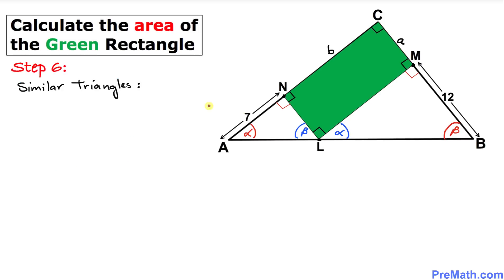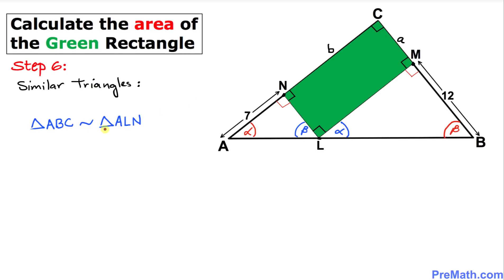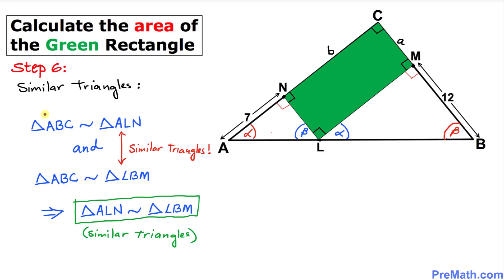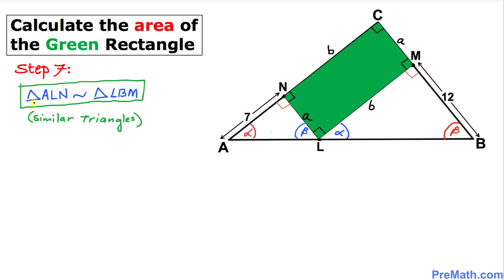Therefore we conclude that triangle ABC and triangle LBM are also similar triangles, once again by the angle-angle-angle theorem. We know triangle ABC is similar to triangle ALN, and triangle ABC is similar to triangle LBM. So we conclude that triangle ALN is similar to triangle LBM — because both are similar to the same triangle ABC.